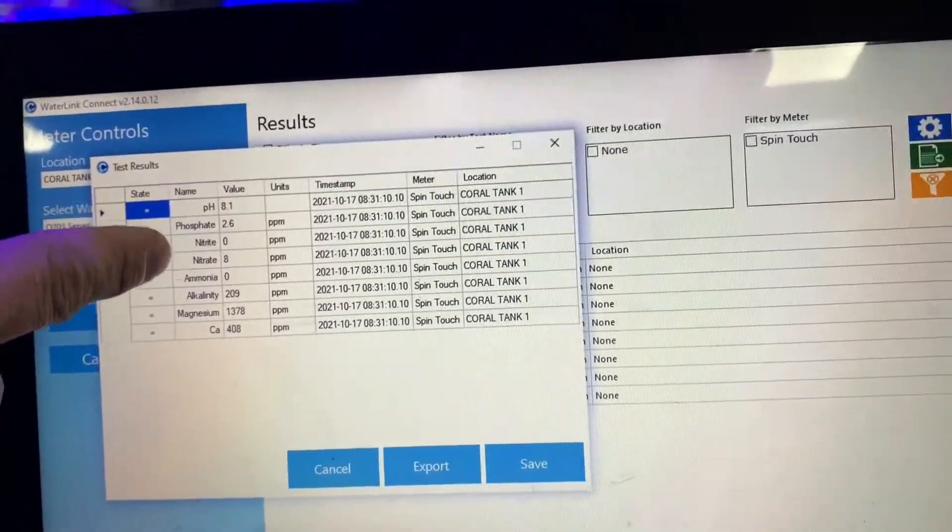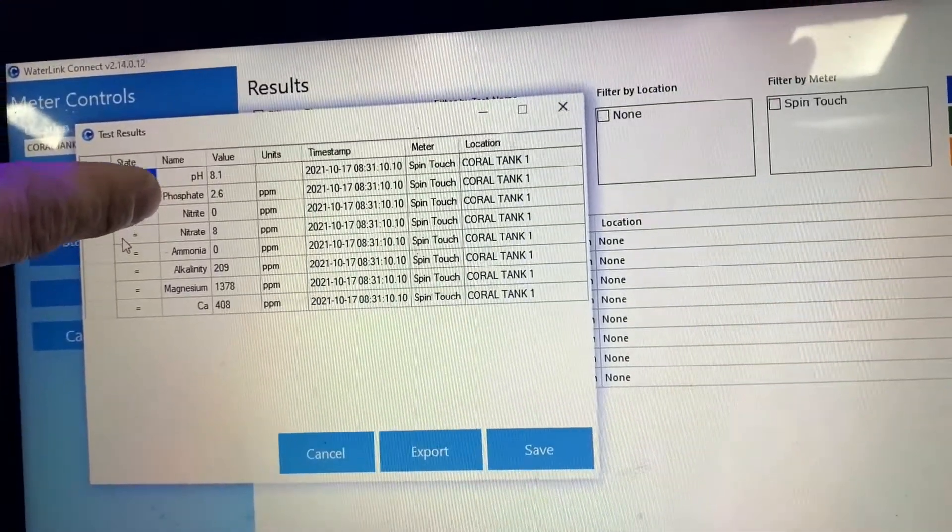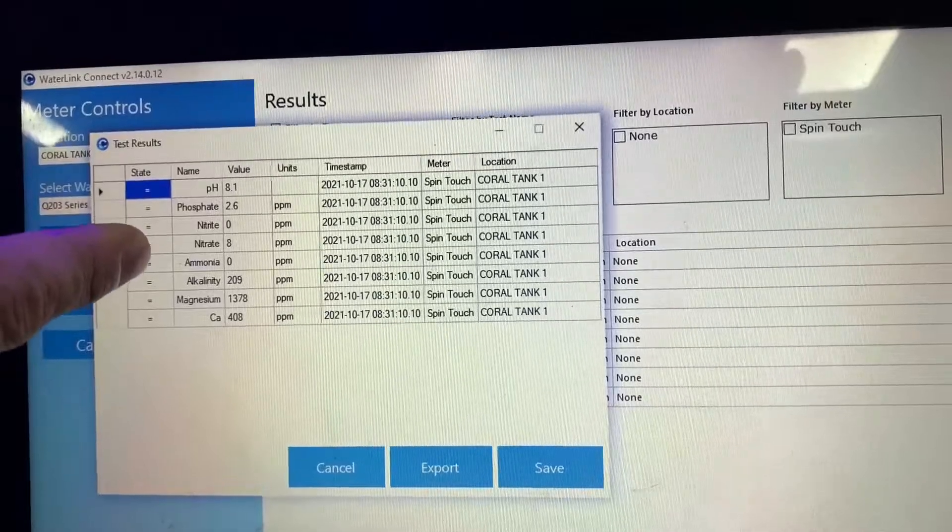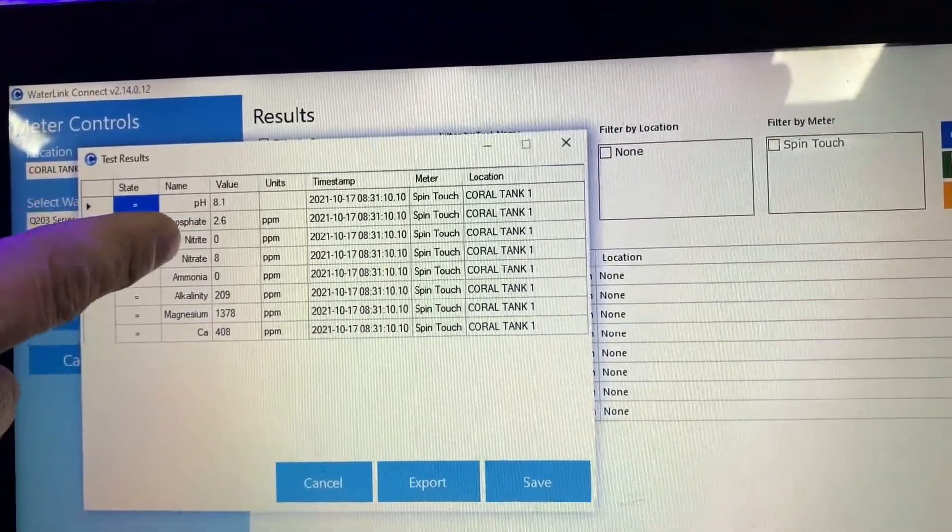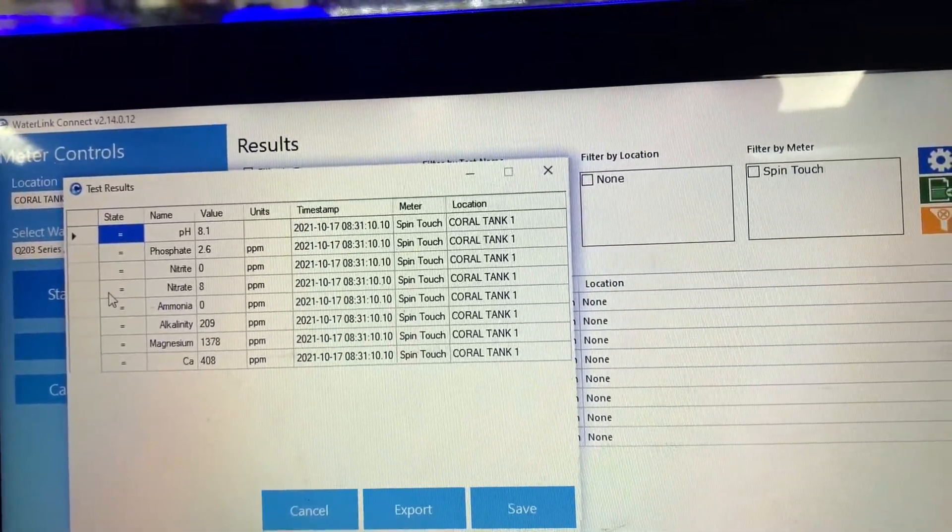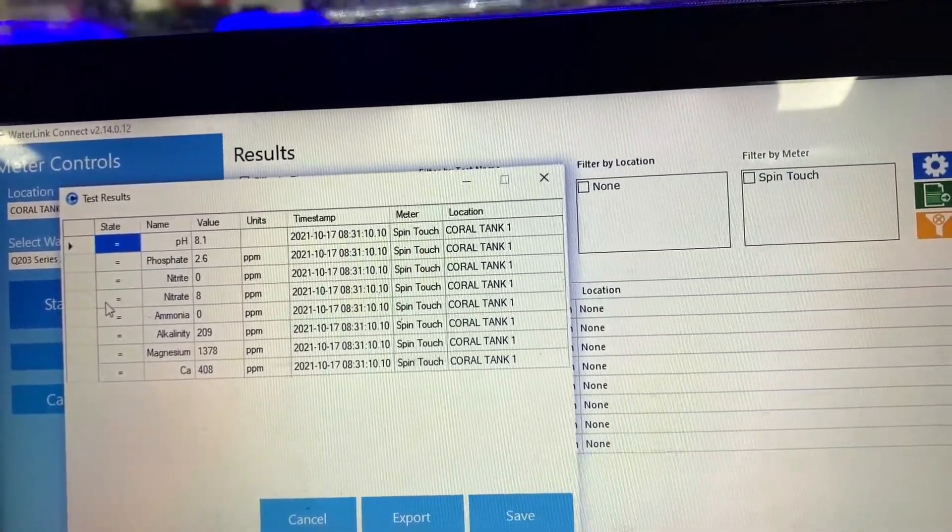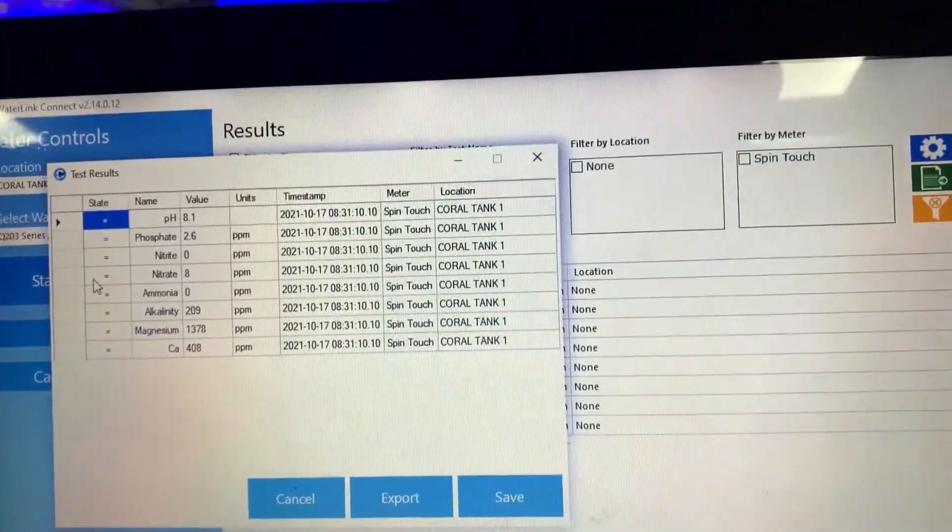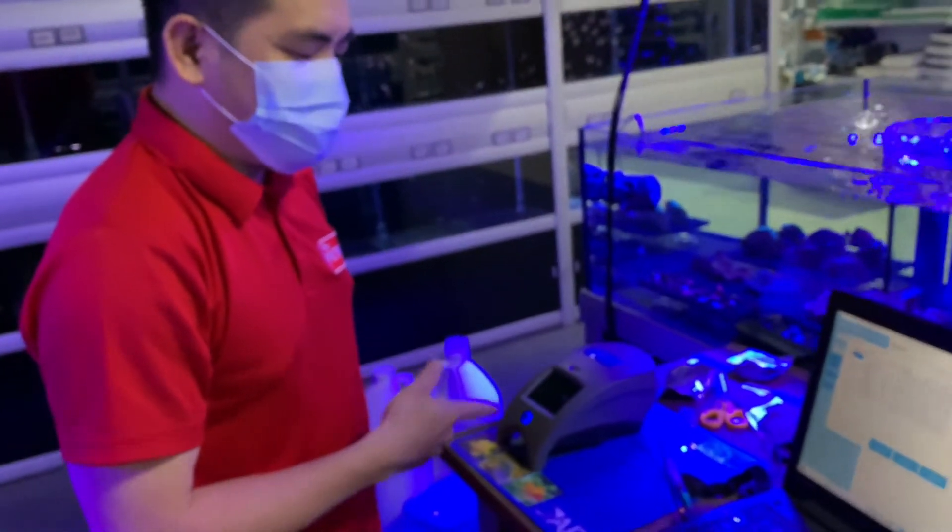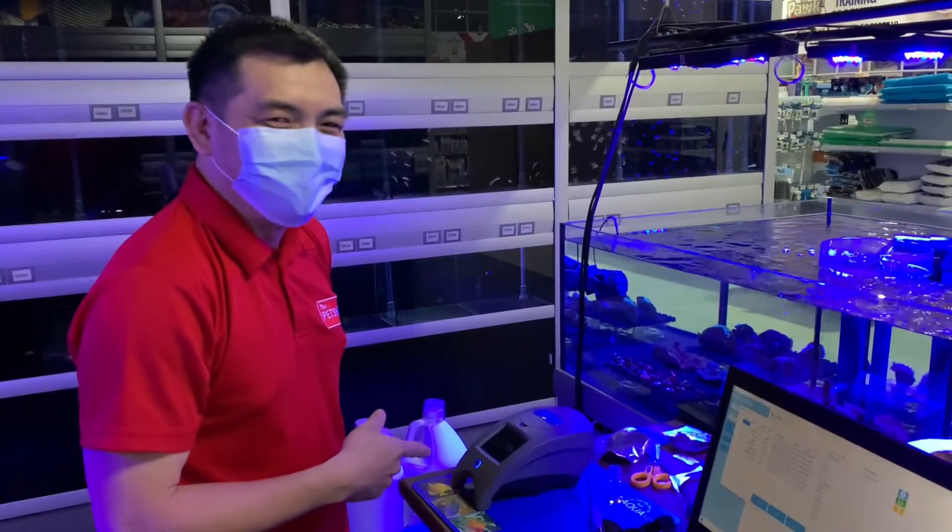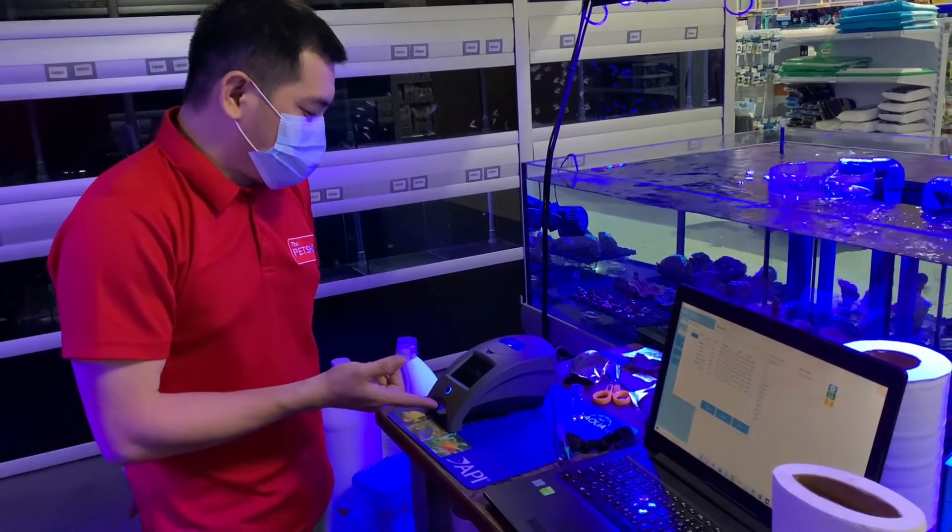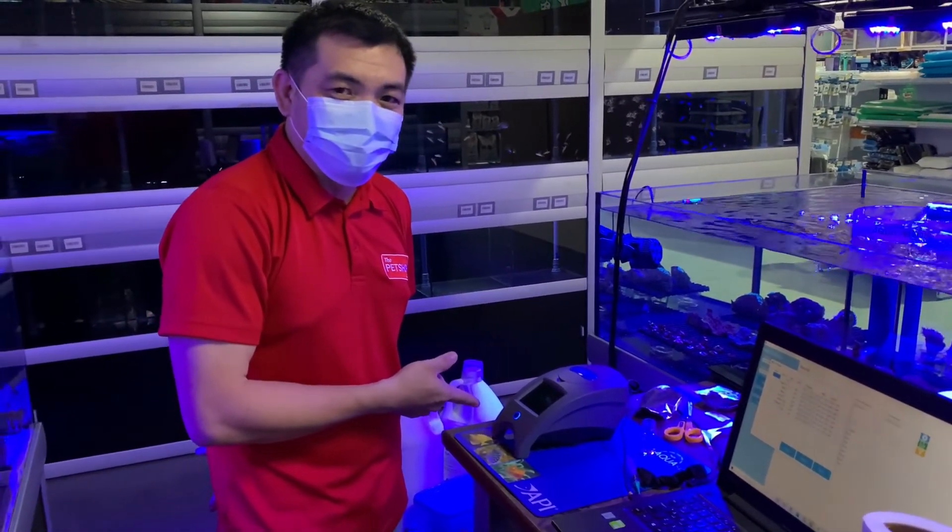The only problem here is what you can see is the phosphate. This level is too high for the phosphate. The ideal level for the phosphate should be only 0.01 to 0.03. That's it. Hope you learn from this video. And only a third is to introduce to you the API AquaSpin. Thank you so much.